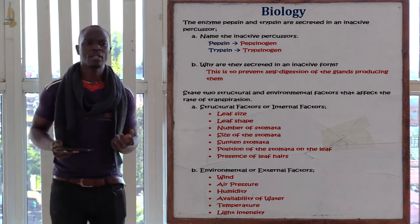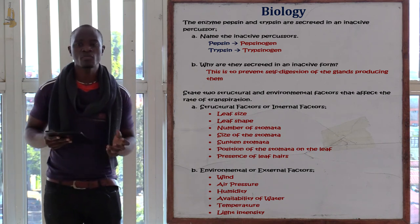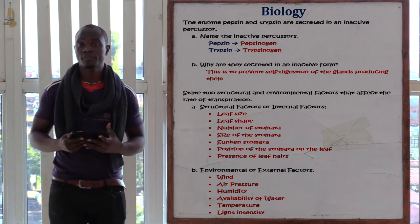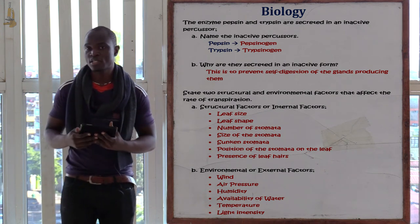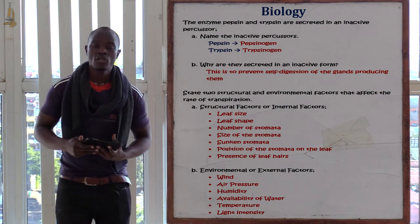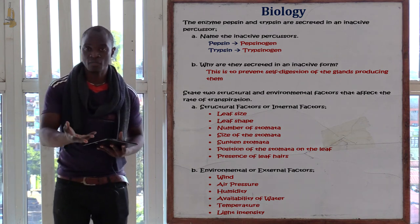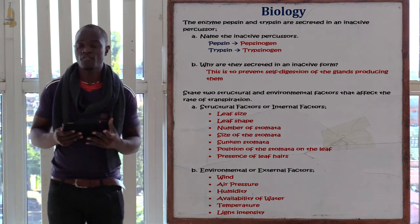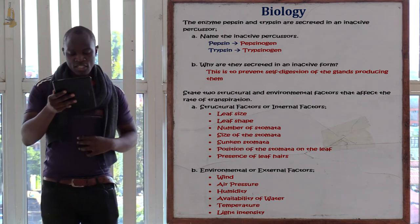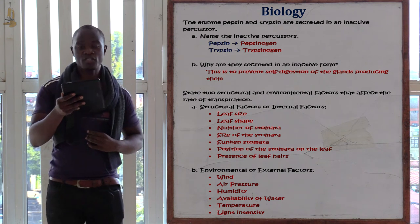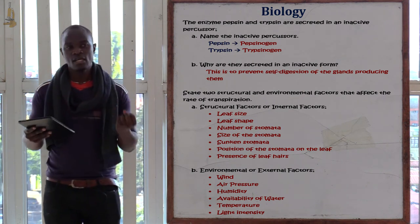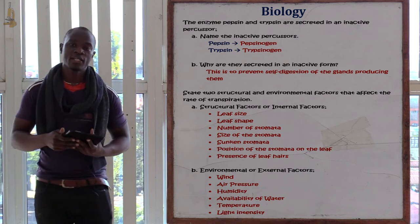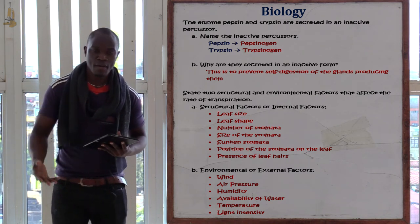If humidity is very high, transpiration will be low; if humidity is low, transpiration will be high. Structural factors are the internal factors affecting transpiration, while environmental factors are the external factors. Examples of structural factors: leaf size, number of stomata, position of stomata. Environmental factors: rainfall, humidity, air pressure.